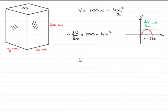Now, in the last part then, we've got to justify that the volume that we've got is a maximum. And to do that, there's two ways that we can actually do this.